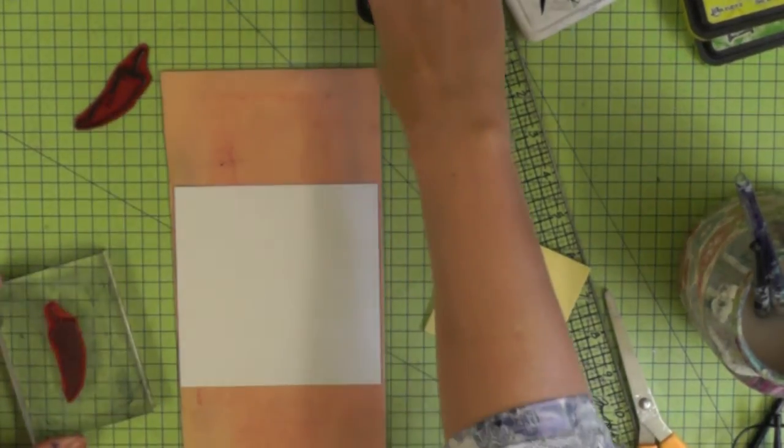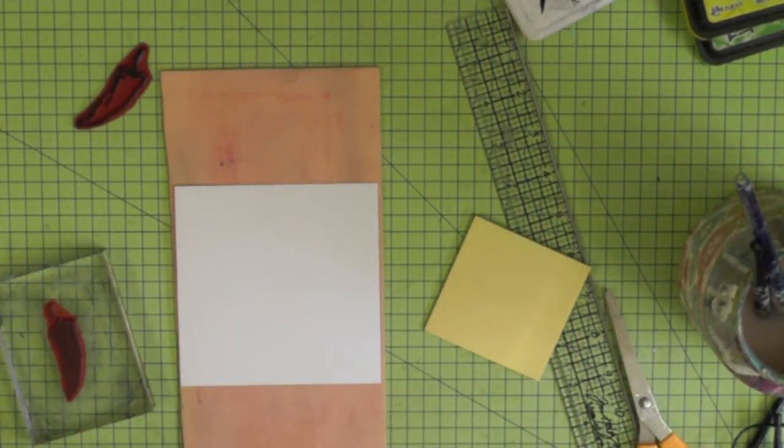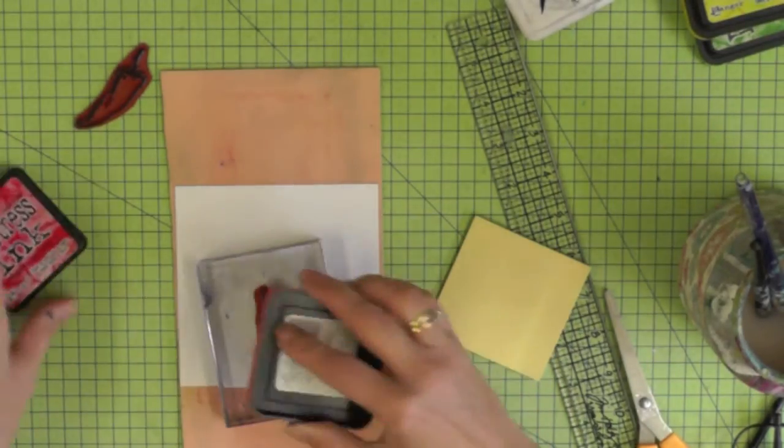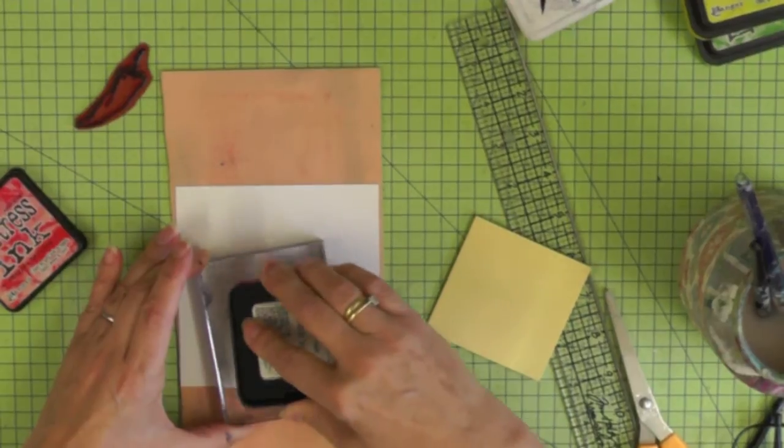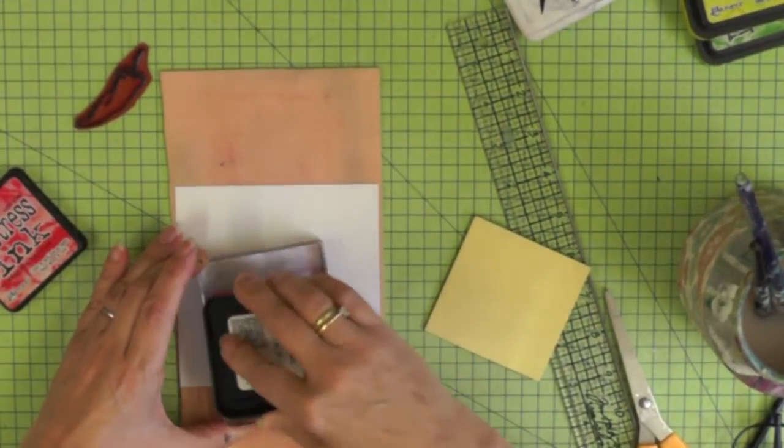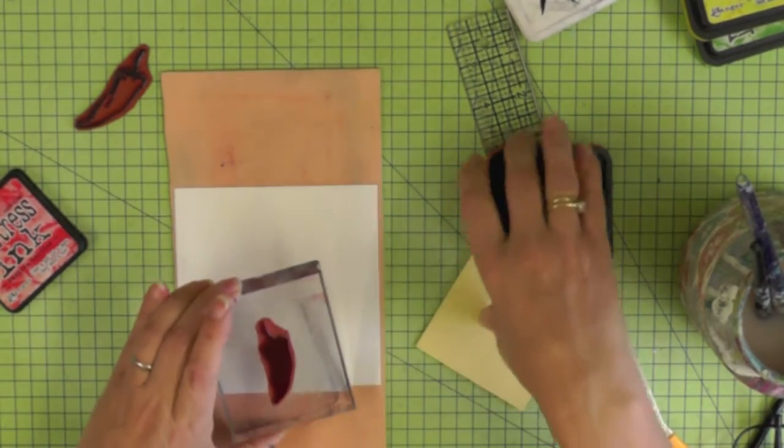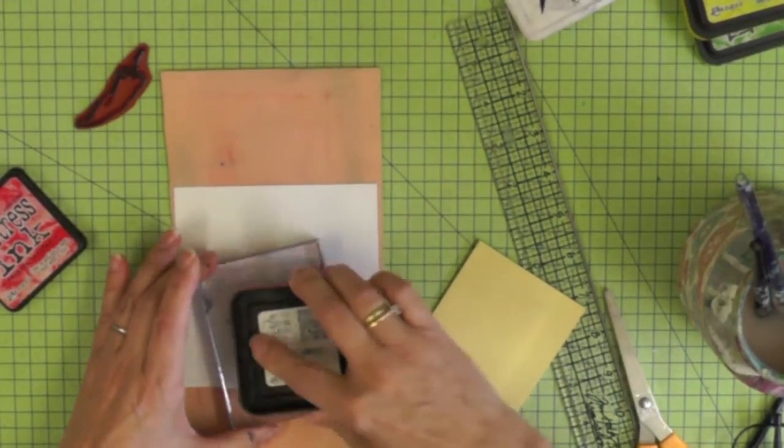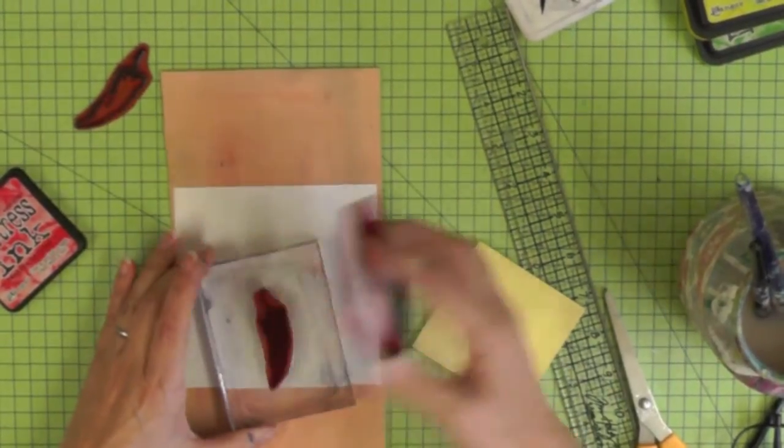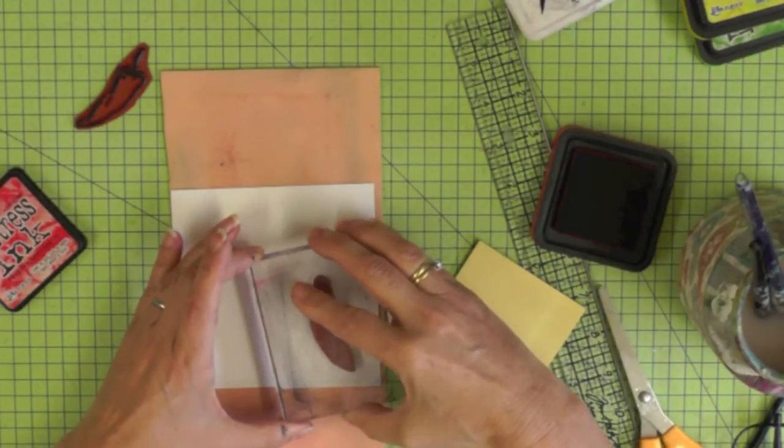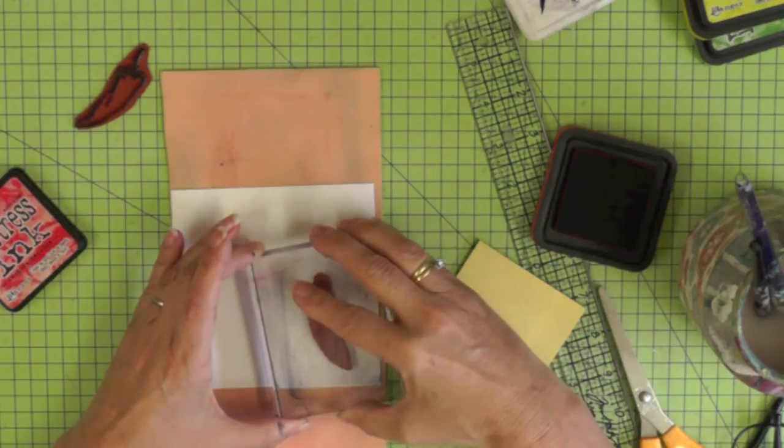In this stamp set there are several chilies that come as a pair. They have one filled in stamp which is the first stamp that we're going to use and there is one which forms the outline. I'm going to be using my red distress ink which is Festive Berries to stamp a red chili. Make sure that you ink up the stamp well with your red ink, whichever ink you decide to use.